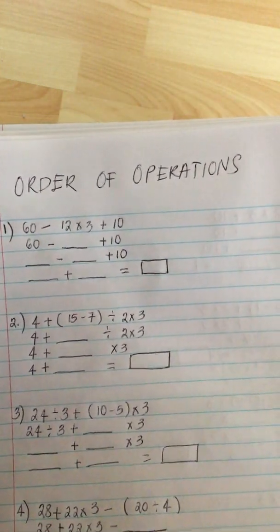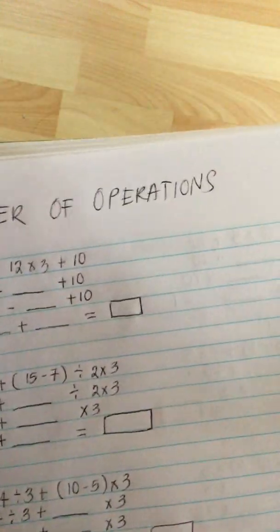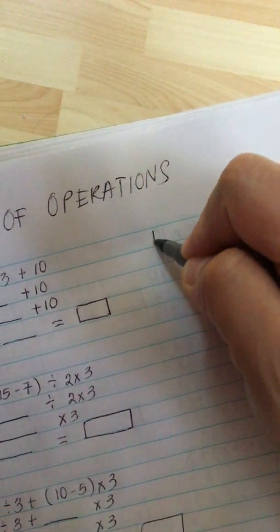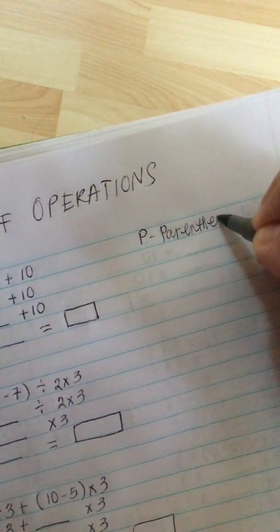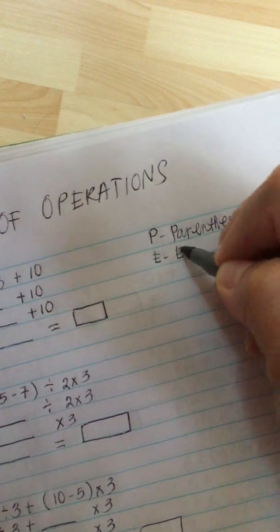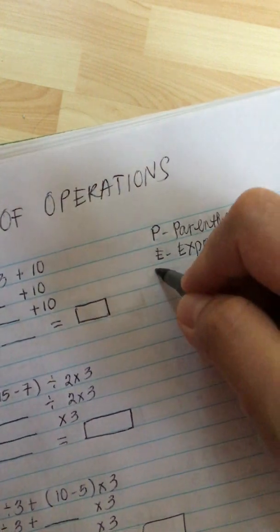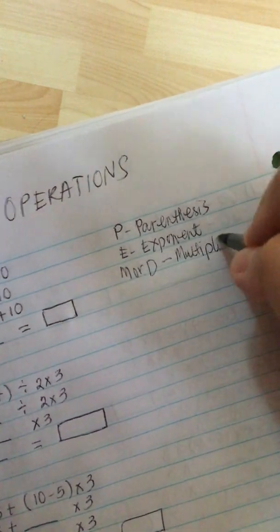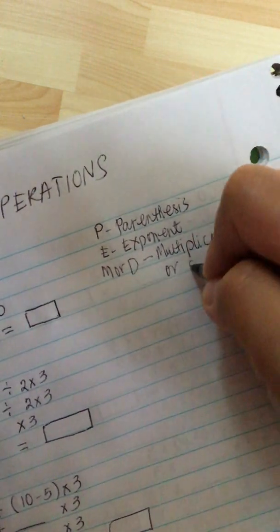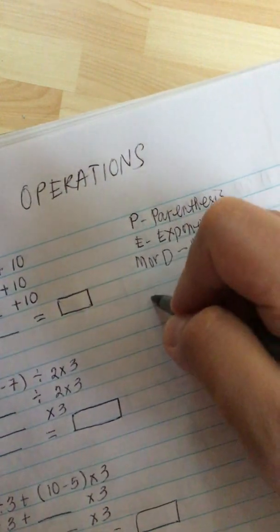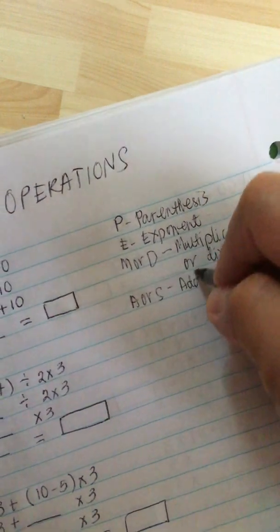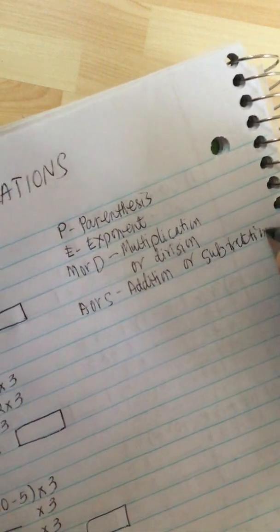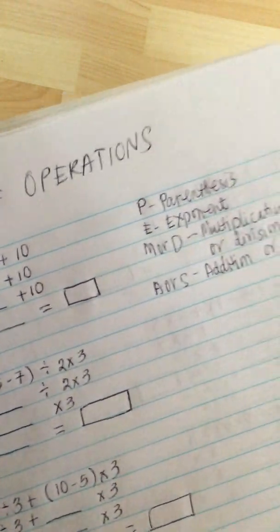We have an order of operations problem. The order is P for Parenthesis, E for Exponent, M or D for Multiplication or Division, and then A or S for Addition or Subtraction. This is what's called PEMDAS.